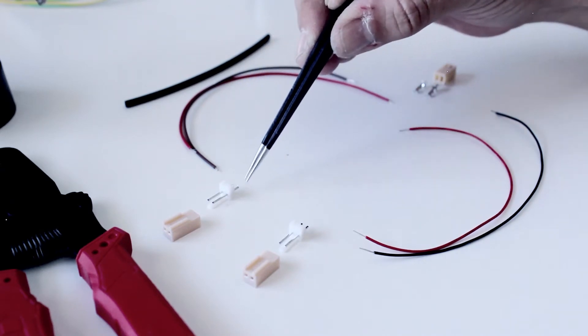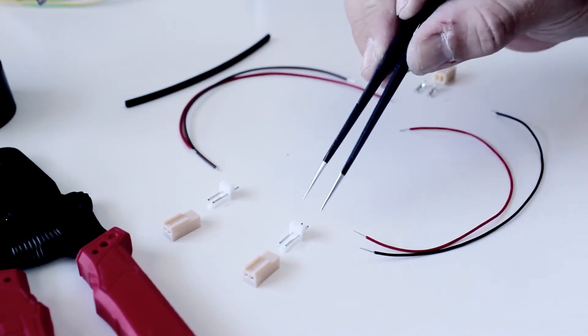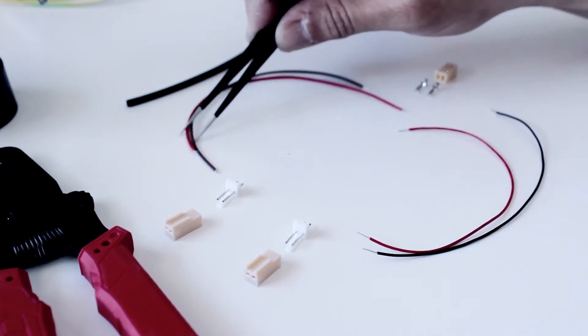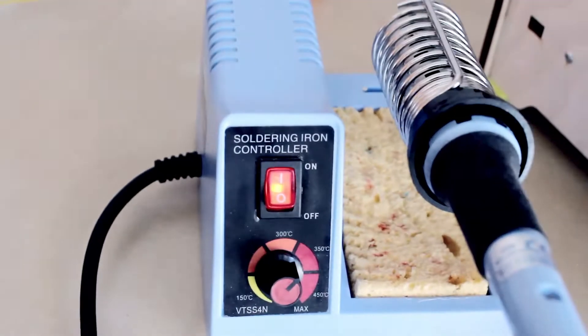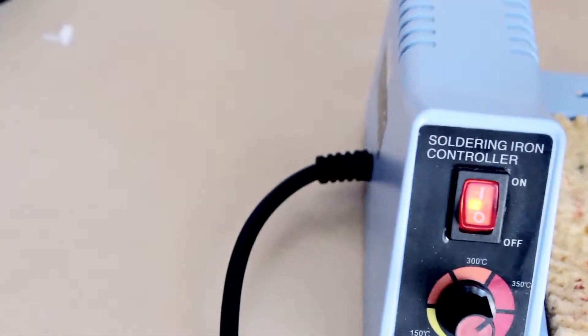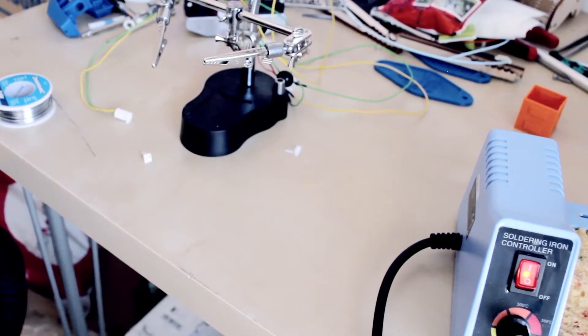So this stays as clean as possible. Let's begin, we will start with the male Molex and the red and black cable. Here we have the soldering iron ready.